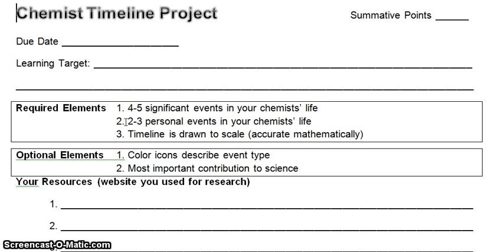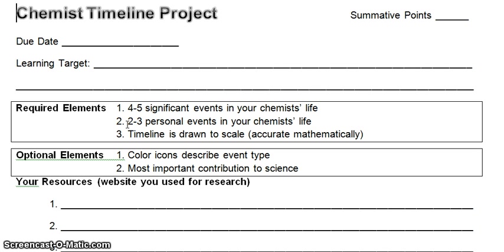You also have the chance to record two to three personal events. That would be things like being born, dying, having kids, getting married, or moving. All of these things can end up determining how much time, energy, motivation, or inspiration a chemist has.